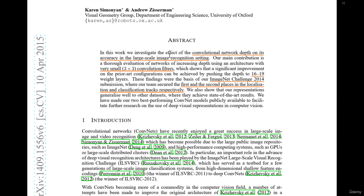In this work, they investigate the effect of convolutional network depth — very important — on its accuracy in the large-scale image recognition setting. Their main contribution is a thorough evaluation of networks of increasing depth using an architecture with very small, that's 3x3, convolutional filters. This shows that significant improvement can be achieved by pushing the depth to 16 or 19 layers — that's why we have VGG16 and VGG19.